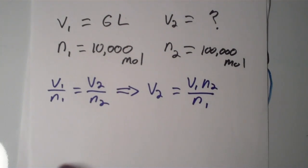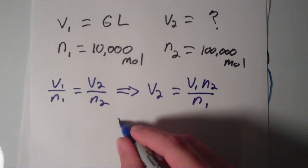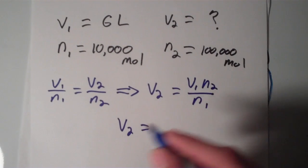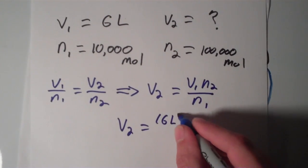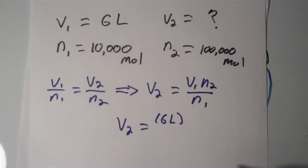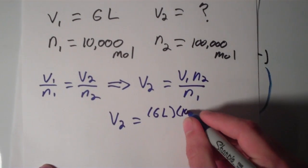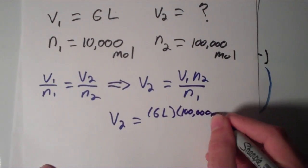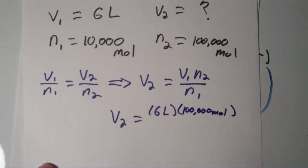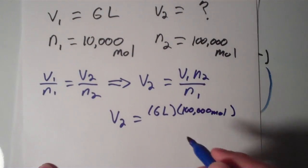So now all we have to do is just plug in the numbers. So we have V2 is equal to V1, that's 6 liters, times N2, which is 100,000 moles, over N1, which is 10,000 moles.